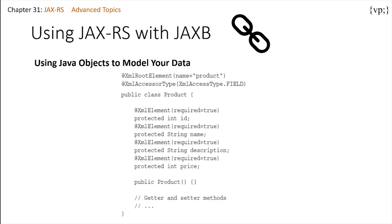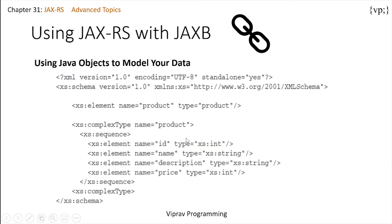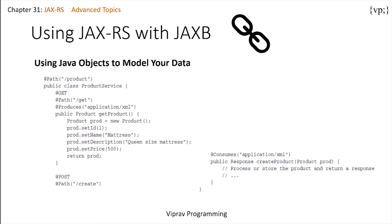For example, if the data you want to expose is a collection of products and each product has an ID, a name, a description, and a price, you can model it as a Java class. Once the JAX-B schema generator is run on top of this, you will get an XML schema definition. With this mapping, you can create product objects in your application, return them, and use them as parameters in your JAX-RS resource methods. NetBeans actually runs the XML schema generator automatically when you build your program, so you don't need to worry about this process too much.